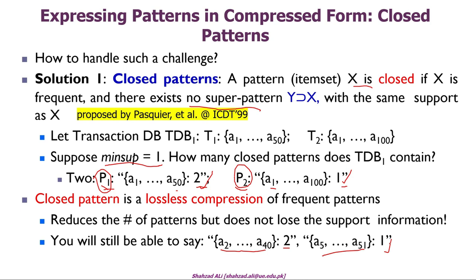To summarize: our challenge was that too many sub-frequent patterns are generated. Closed patterns give us a small number of patterns that serve as a compressed representation of the full set of frequent patterns. A closed pattern X is one that is frequent and has no super-pattern with the same support count.